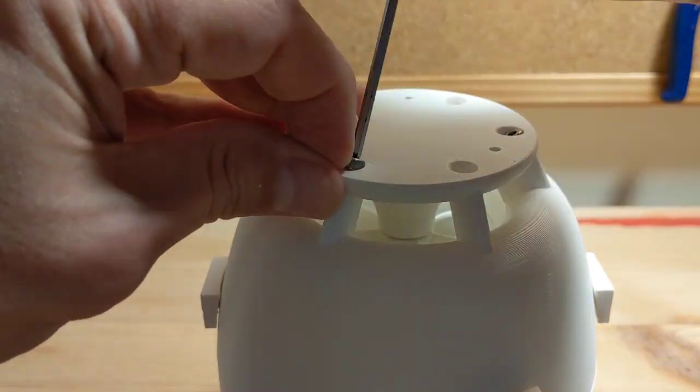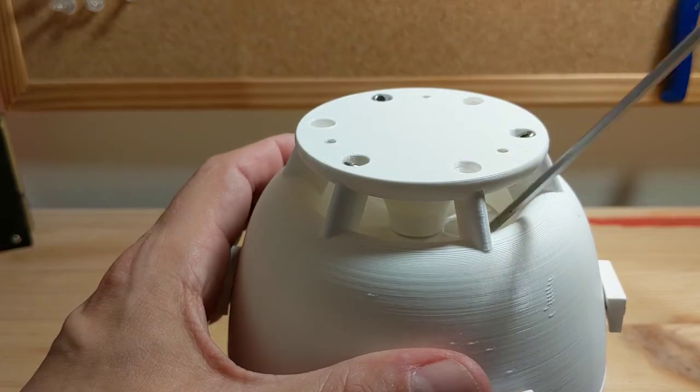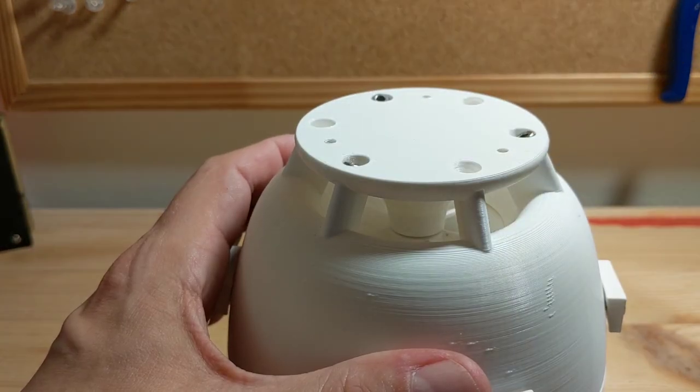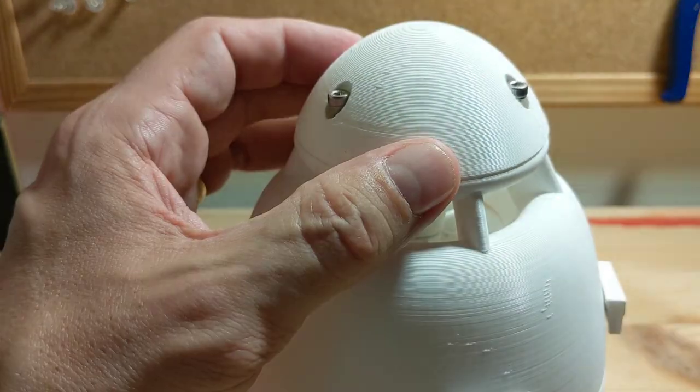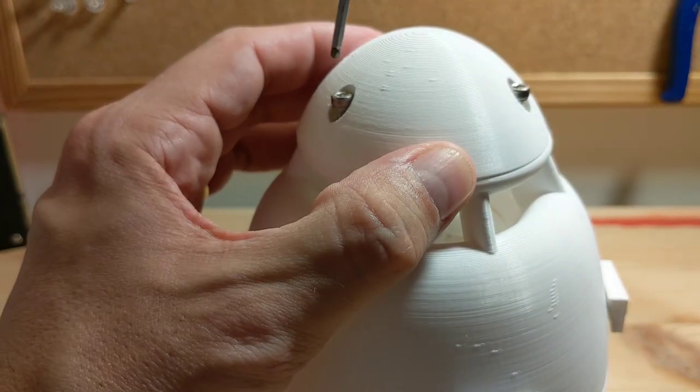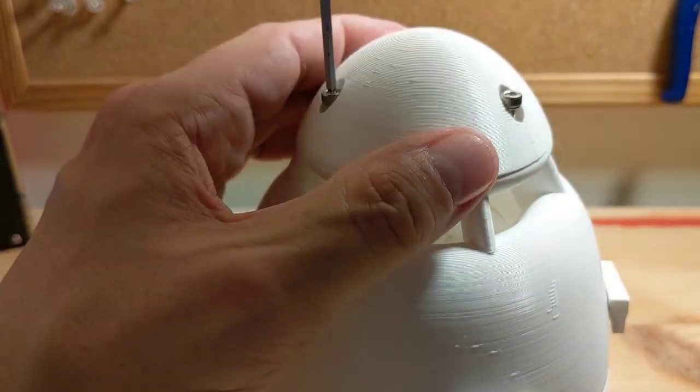So fastening this in. It's important to make sure that the screws go in far enough so that the cover isn't blocked. And again it's worth just checking to make sure the motor, the rotor, still spins freely.